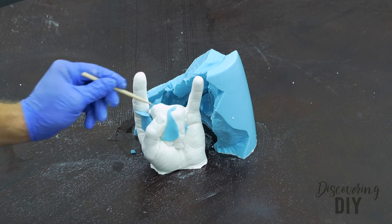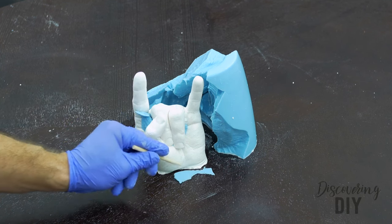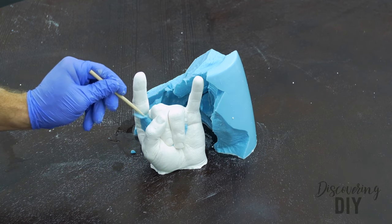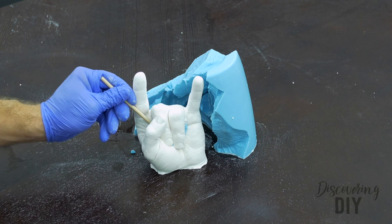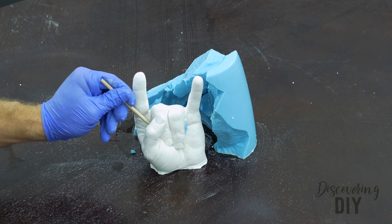Use the provided wooden detailing stick and detailing pen to clean off residual alginate from the casting. Work slowly and carefully. It is not necessary to finish cleaning the casting in one day.